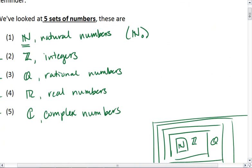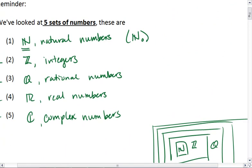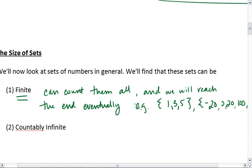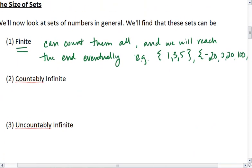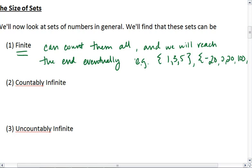None of these sets up here are finite. We will always have to count forever, and we'll never reach an end. Which brings us to the two types of infinite sets. We have countably infinite and uncountably infinite.